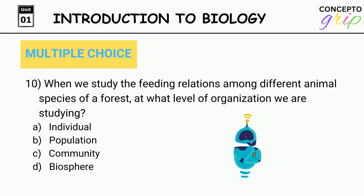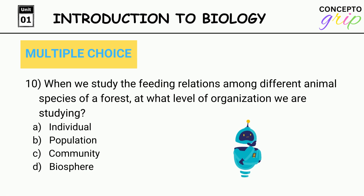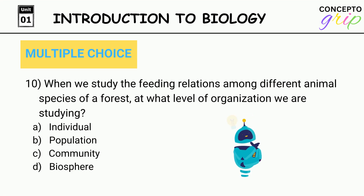Question 10. When we study the feeding relations among different animal species of a forest, at what level of organization are we studying? A. Individual, B. Population, C. Community, D. Biosphere. Correct option is C. Community.